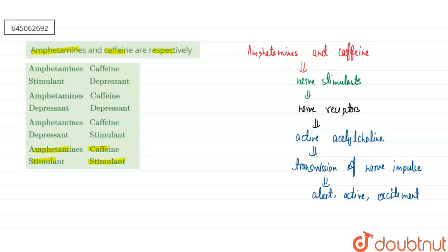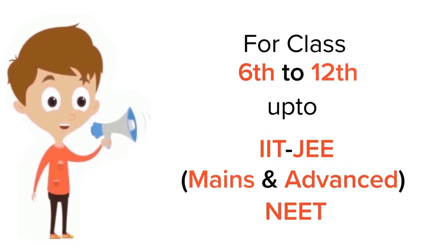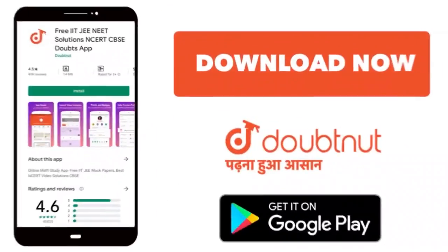For class 6 to 12, IIT-JEE and NEET level, trusted by more than 5 crore students. Download Doubtnet app today.